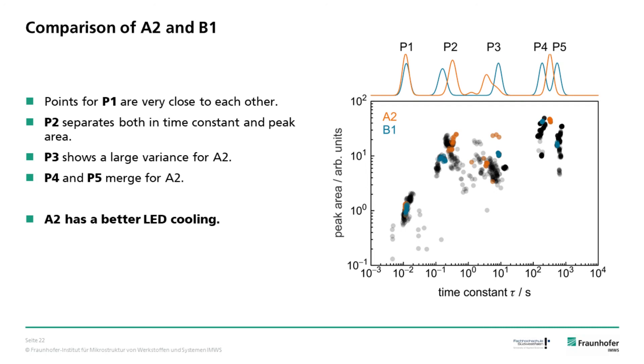As an example, we compare lamp A2 and AB. As can be seen, the points of peak 1 are very close together. For peak 2, the points of the two lamps separate for the time constants as well as for the peak areas. Peak 3 shows a large variance for lamp A2. What has to be noticed is that peak 4 and peak 5 merge for lamp A2.